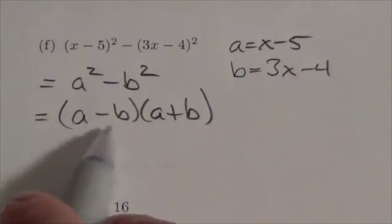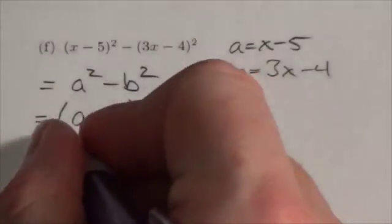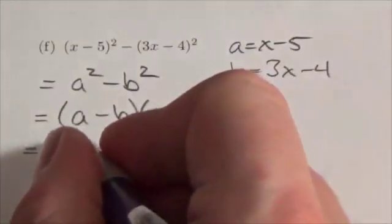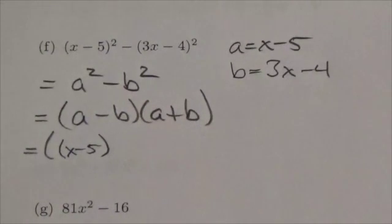However, I can't leave it like that because a and b are not part of the original expression—I just used those to make it a little bit easier on myself. So now what I've got to do is I've got to go back in there and make a equal x minus 5, and notice I put that in brackets. It's very important that you do that. If you don't put it in brackets, you run the risk of making a sign error.